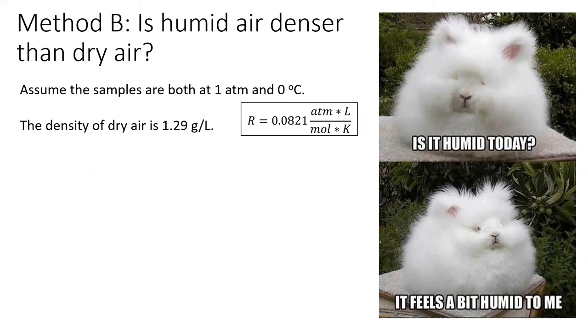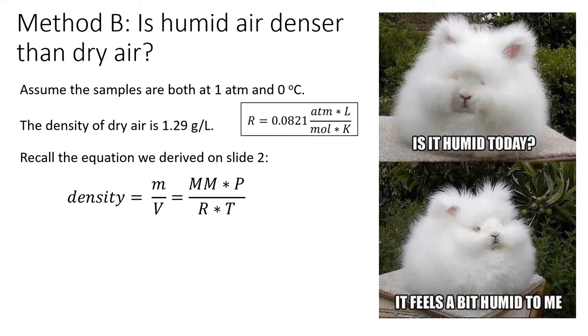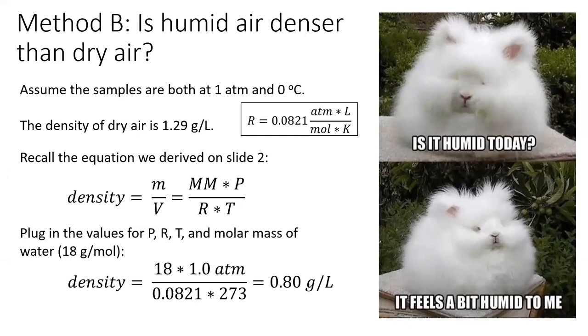In method B, I would search deep in my memory banks for that equation we derived, which I only use for questions such as this. The equation is that the gas's density equals molar mass times pressure divided by the ideal gas constant R and temperature. Now, I just plug in my known values and get my answer. You can see that the density of water vapor, 0.8 grams per liter, is less than the density of dry air.